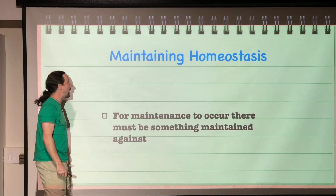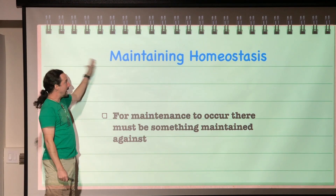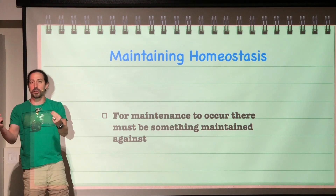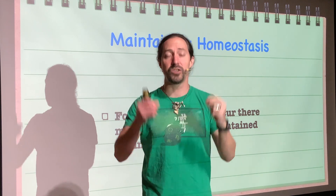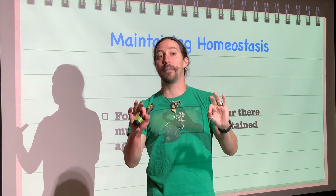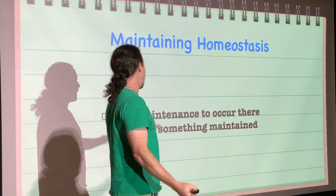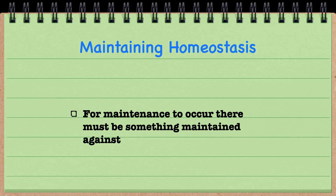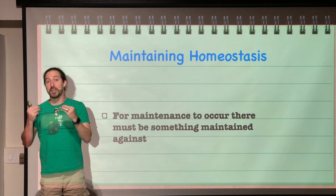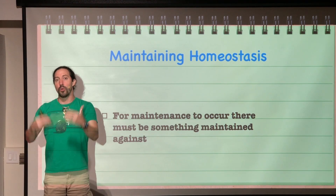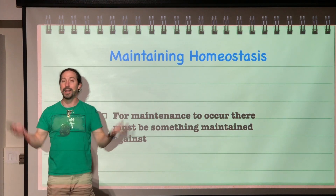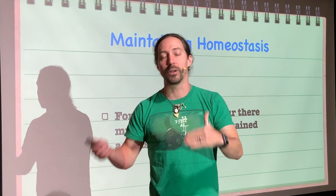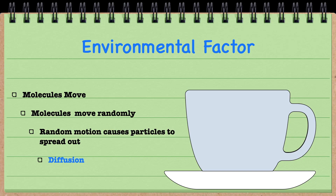The first thing we have to recognize is that maintaining homeostasis is a characteristic of life — maintaining a stable internal environment. The cell has to actively fight against some force or factor, because without doing so it would not have a stable internal environment. That specific factor is diffusion.